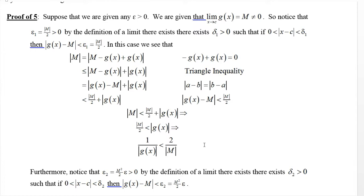Next, define epsilon_2 = m²/(2ε), where ε is our original epsilon. That's a positive number since squaring makes it positive, and strictly positive because m is not 0. For that epsilon_2, there exists a corresponding delta_2 such that |g(x) - m| < epsilon_2 = m²/(2ε) when |x - c| is between 0 and delta_2.